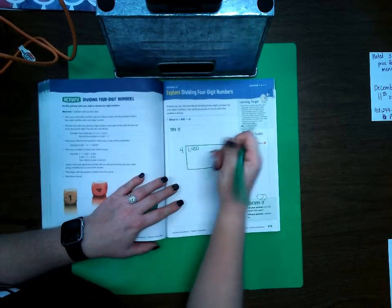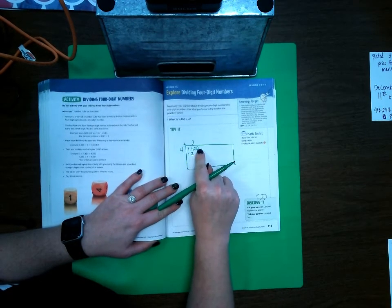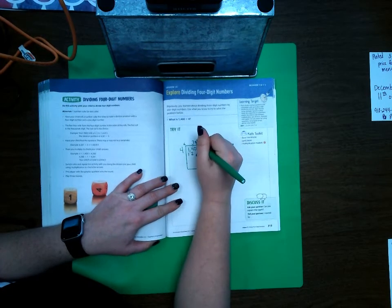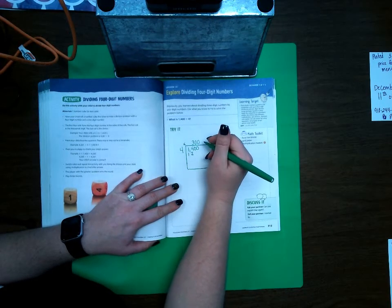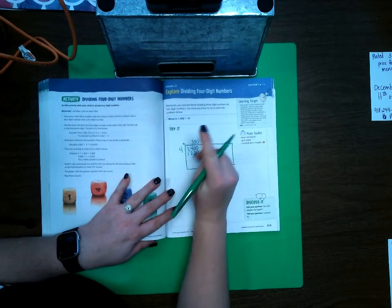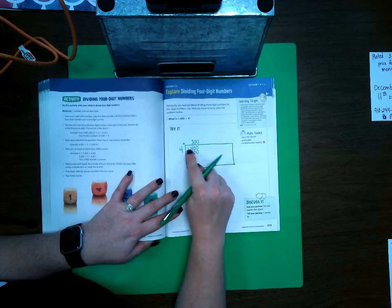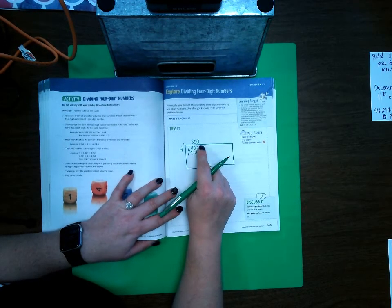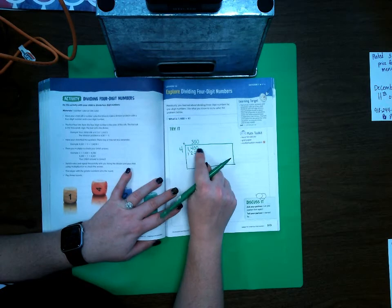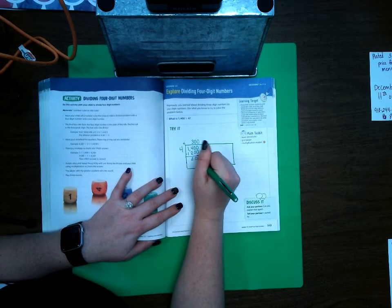Well, if I do four times three, it's 12, but notice how I have two more digits here. So I am going to add two zeros on the back here, and so that's going to be 1200. So I did 1400 minus 1200. That leaves 200 left.